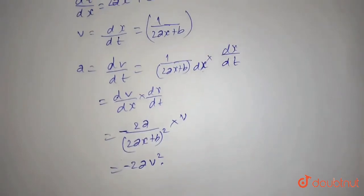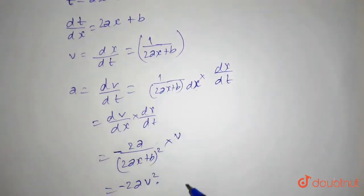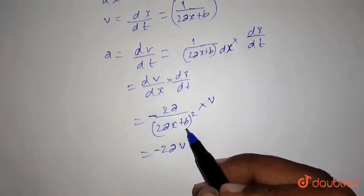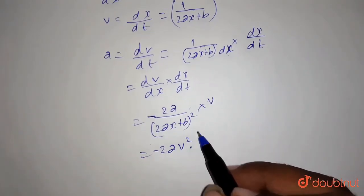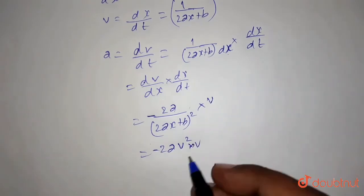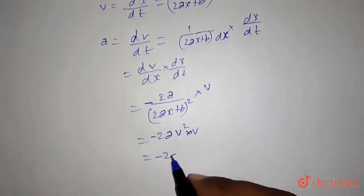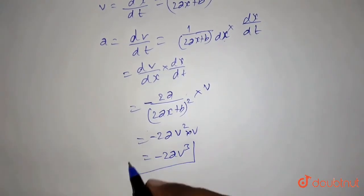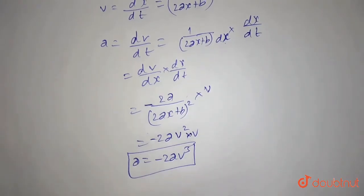So this is our answer. As you can see, v equals this. So we can write it as, since v equals 2ax plus b, so it is equal to 2a v square into v, this part. It will be minus 2a v cube. This is the acceleration you need to find.